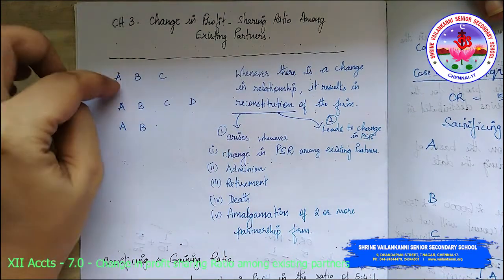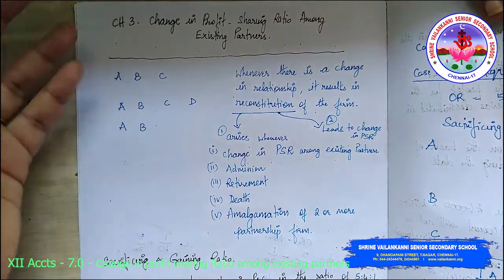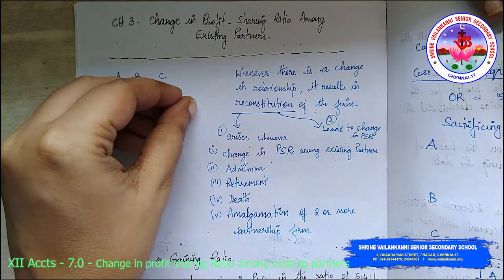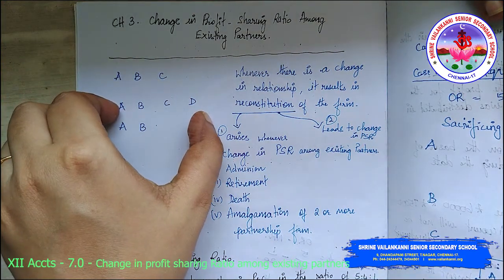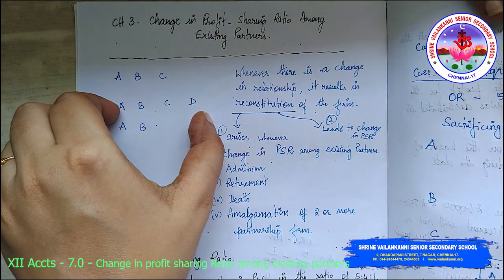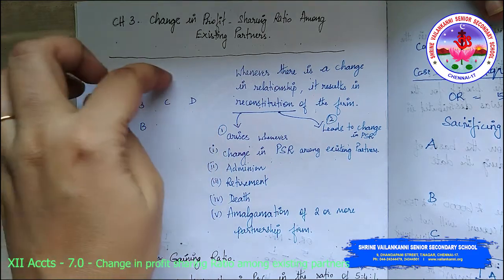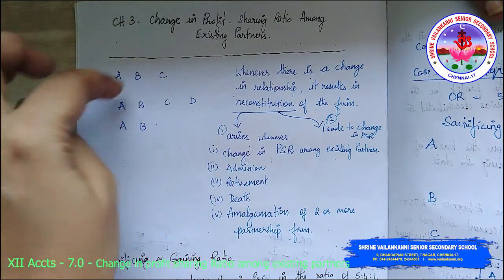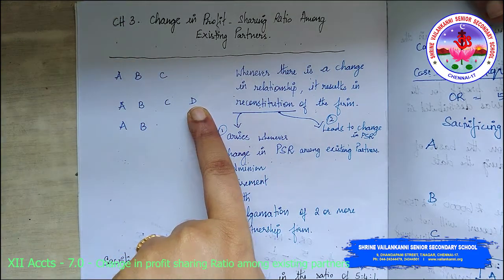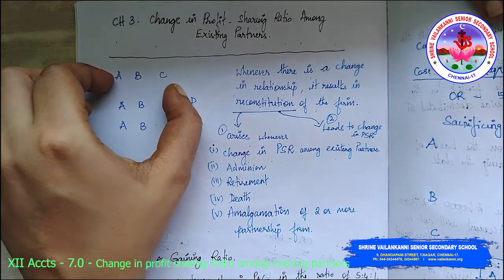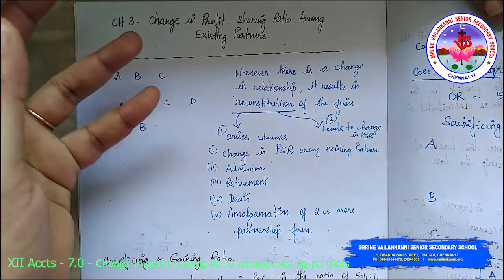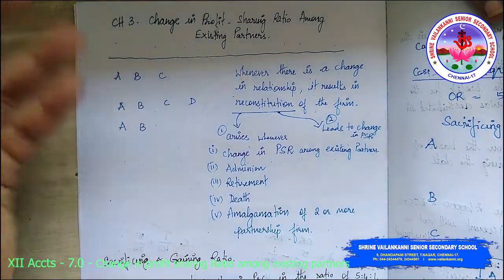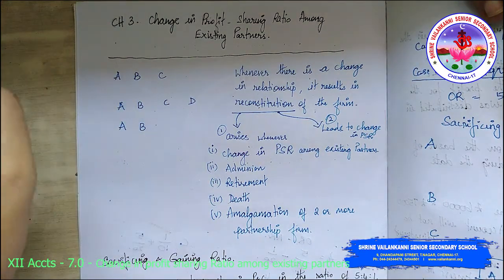For example, if A, B, C are existing partners and a new partner D is admitted, the profit sharing ratio of A, B, C, D will change. Similarly, if C dies or retires, then A and B alone have to share the profits.